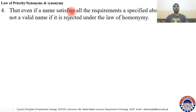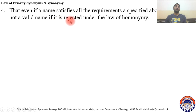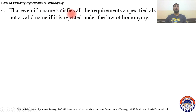Condition four: even if a name satisfies all the requirements specified above, the name is not a valid name if it is rejected under the law of homonymy. So if all the above conditions are satisfied but the name was rejected under the law of homonymy, it will not be acceptable.